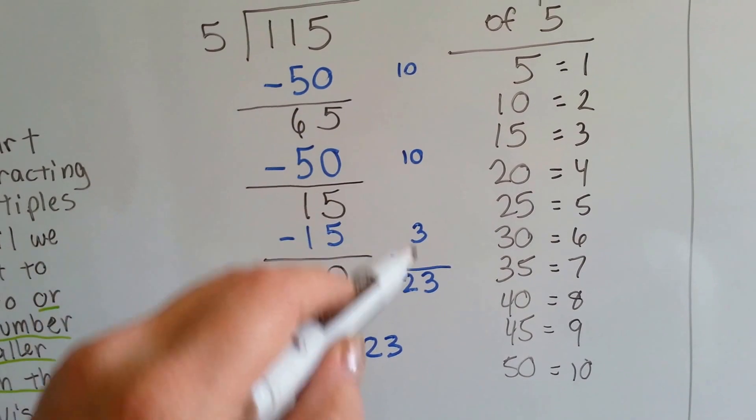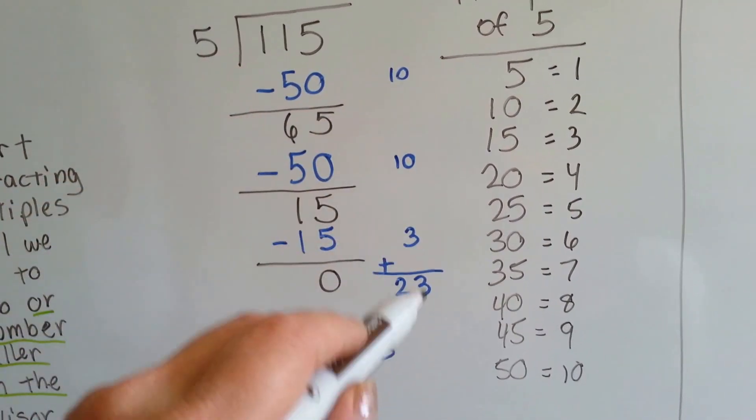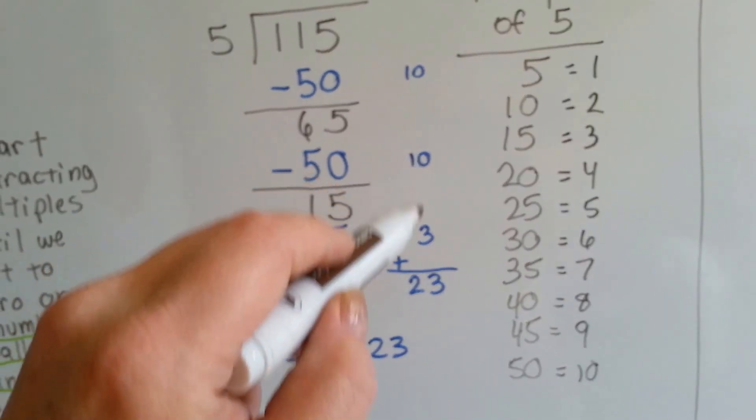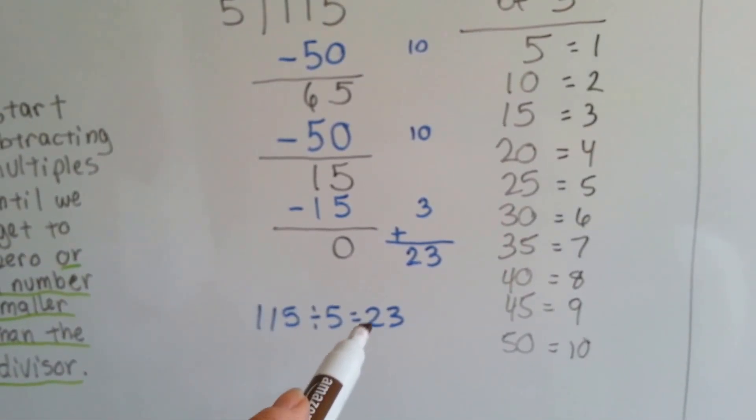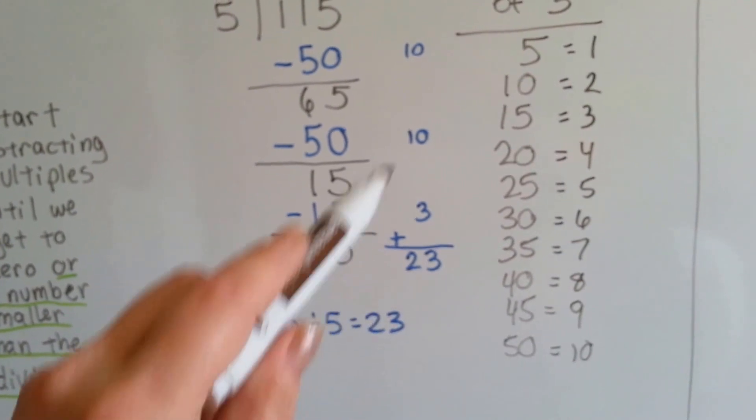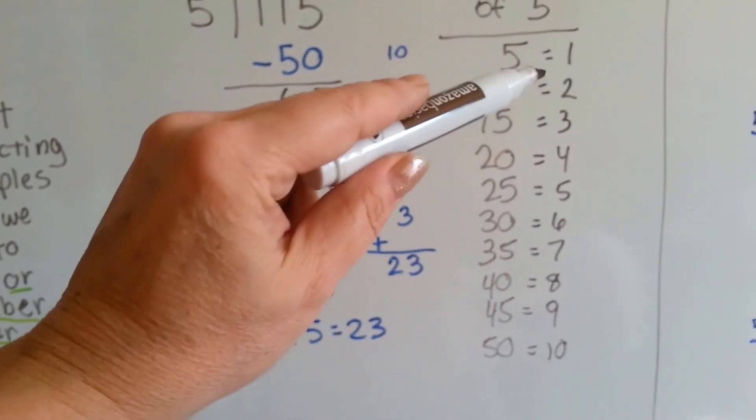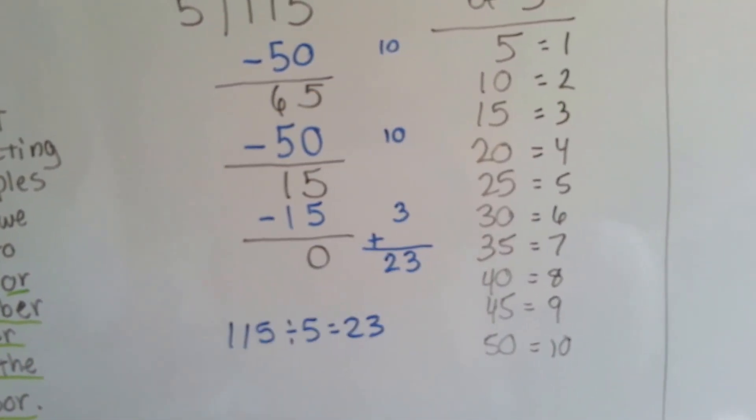We add up the counting numbers and we get 10 plus 10 plus 3 is 23. So, we know 115 divided by 5 equals 23. See? See how we did that?